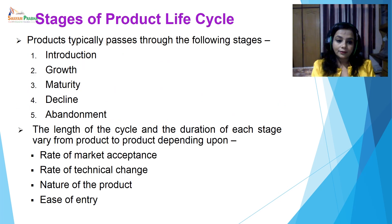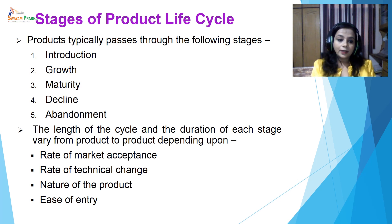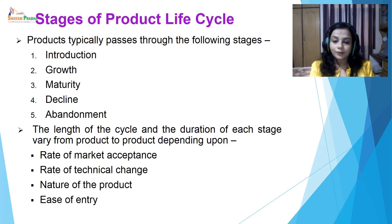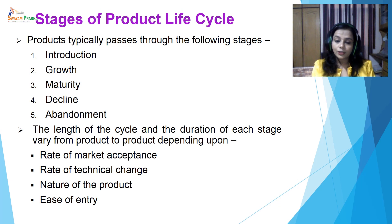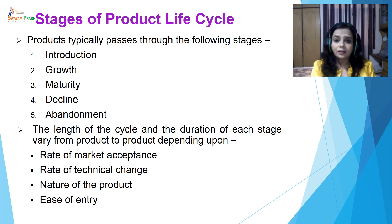Stages of product life cycle. Products typically pass through the following stages: introduction, growth, maturity, decline and abandonment. In certain books, only the first four stages are discussed: introduction, growth, maturity and decline. The length of the cycle and the duration of each stage vary from product to product. In fashion goods, the duration is very quick, but in certain heavy goods, it may be very spread out. The rate of market acceptance, the rate of technical change, nature of the product, ease of entry and many other factors are the determining factors which decide the length of the cycle.